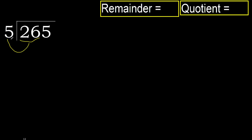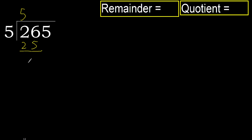26 is not less, therefore we work with 26. 5 multiplied by which number is nearest to 26, but not greater? 5 multiplied by 6 is 30 — 30 is greater. 5 multiplied by 5 is 25 — it's not greater. 26 minus 25 is 1.